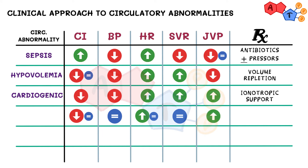The fourth condition on our list: although the JVP is high, most of the other parameters can be normal. The main problem here is high preload, and thus the treatment would be some sort of diuresis.